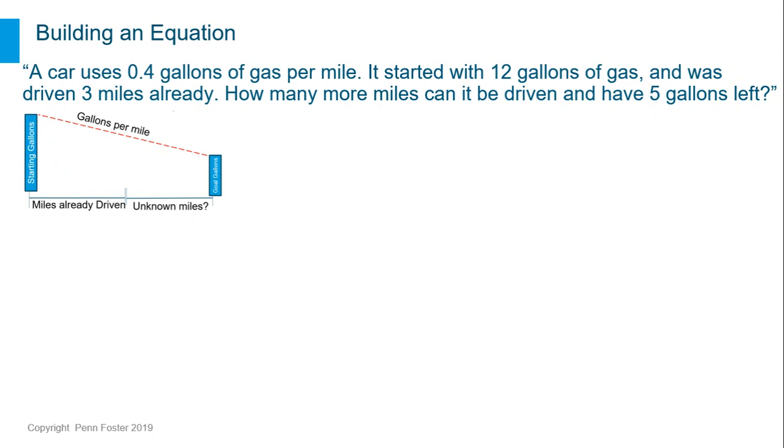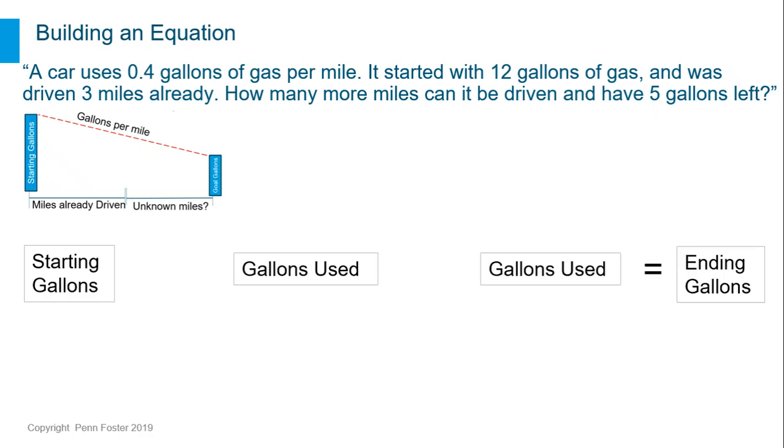Now we need to figure out how to build this information into an equation. Our starting amount and goal amount are gallons of gas, so we need to figure out how many gallons of gas are used in between. We will need to subtract that from the starting amount.